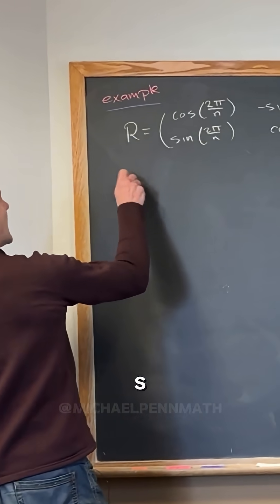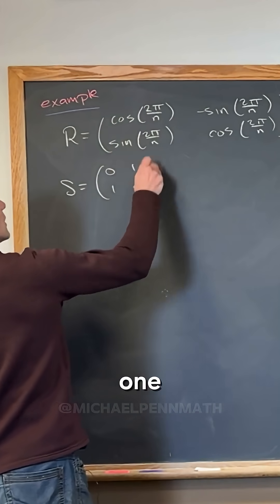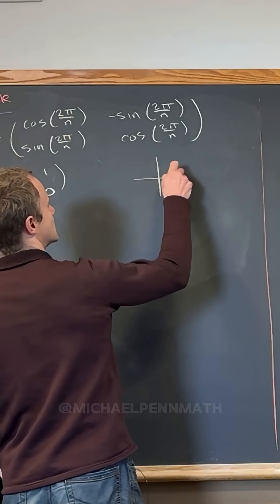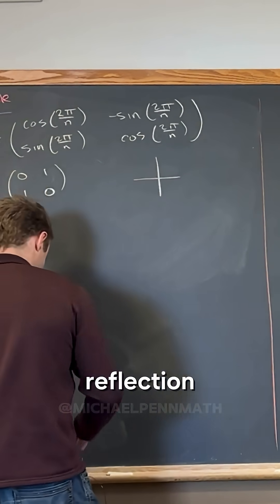Good. And then let's say S is equal to this, so 0, 1, 1, 0. So what's that? That is reflection about this line right here, I believe. Yeah, it's reflection about that line.